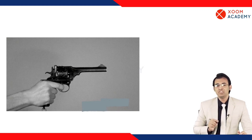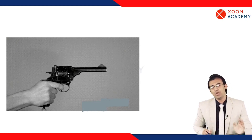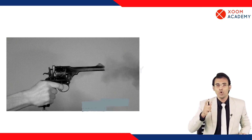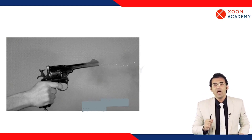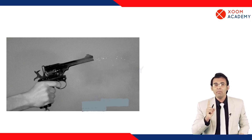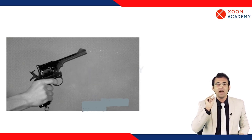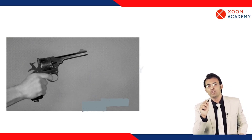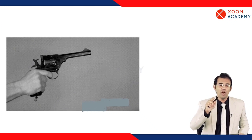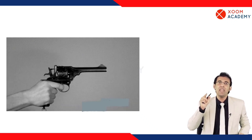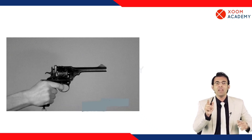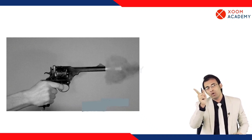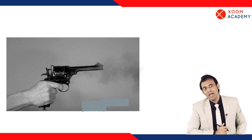Now you can see this GIF, which will give you even more clarity: how you open the firearm, how the hammer goes up, how the firing pin moves forward, hits the bullet, and the bullet goes out of the barrel.